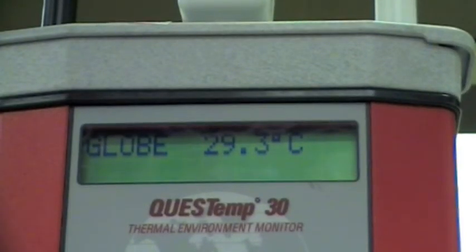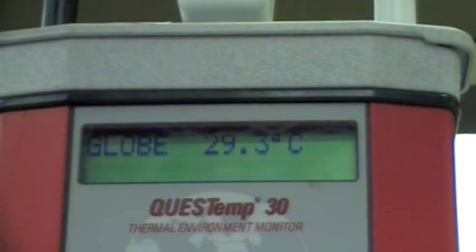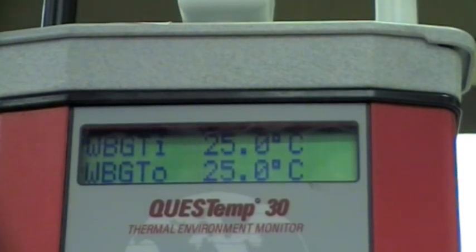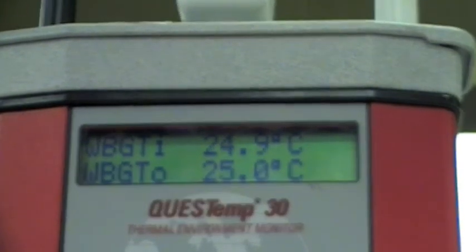This is the black globe temperature so this is measuring radiant heat and that is 29.3 degrees centigrade. The display is now showing the WBGT index.